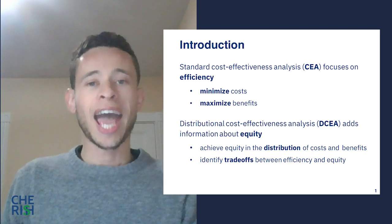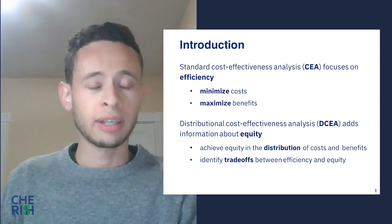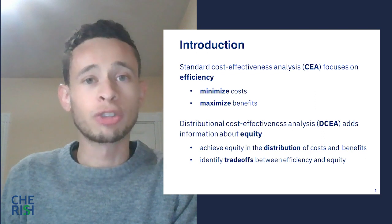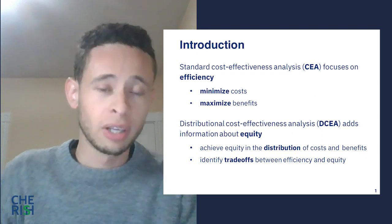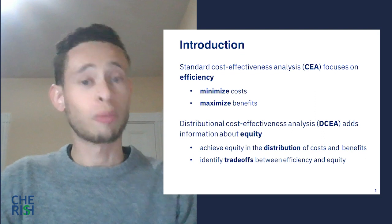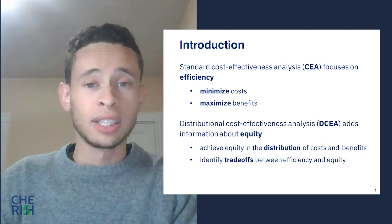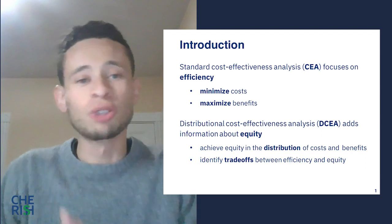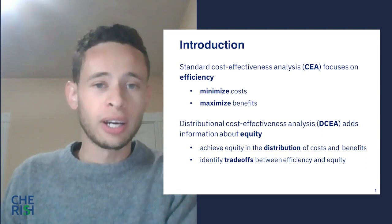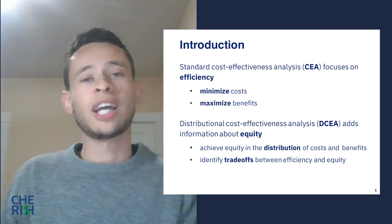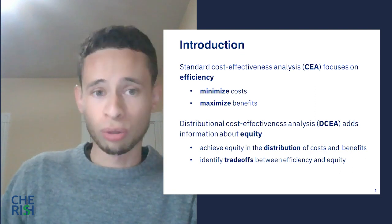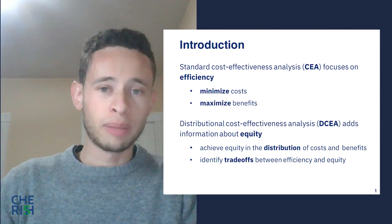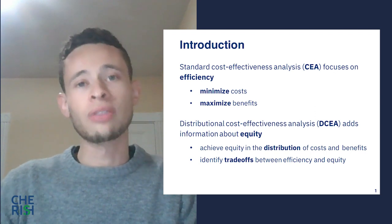Essentially, DCEA adds to traditional CEA information about equity by specifically including distributions of costs and benefits according to different population subgroups. DCEA identifies and quantifies the potential trade-offs that can occur between achieving efficiency — in the sense of improving total population health — and achieving equity by reducing unfair health inequality.